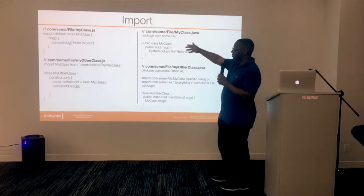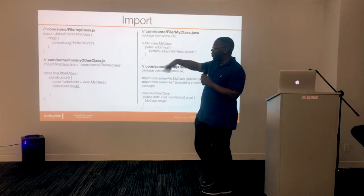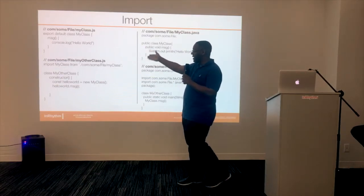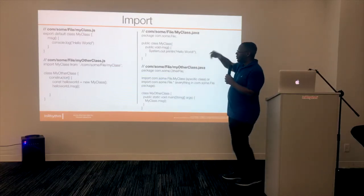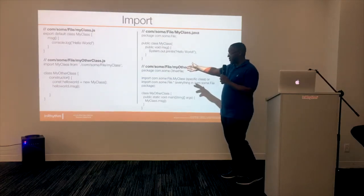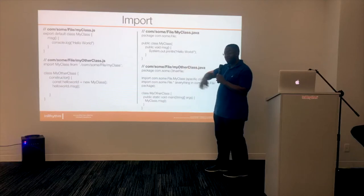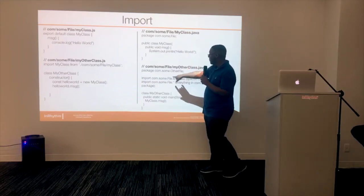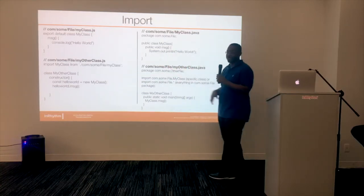Imports. In JavaScript, you have to export it if you want to use it in another file. When you import it in another file, everything is separated in the file structure by slashes. In Java, you don't export it — you just add it as part of the package and import the package. If you want a particular class, you specify the class; if you want everything from the package, you put a star. And instead of slashes, it's dot notation.